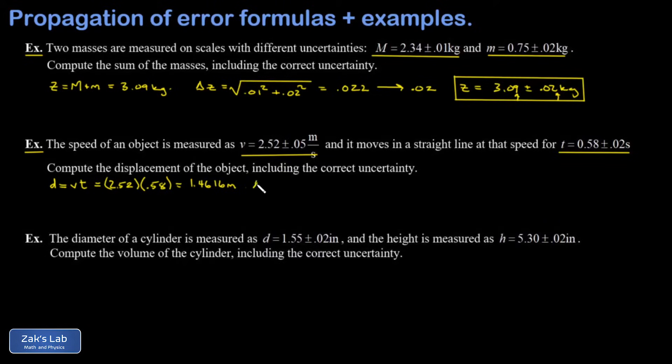Next, we look at the uncertainty. And this time, because it's a product, we have to state everything in terms of relative uncertainty. So I have delta D over D equal to the square root of the sum of the squares of the relative uncertainties here. So I'm going to take delta V, which was 0.05, and divide by V, which was 2.52. We square that.